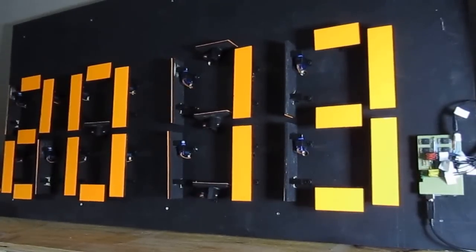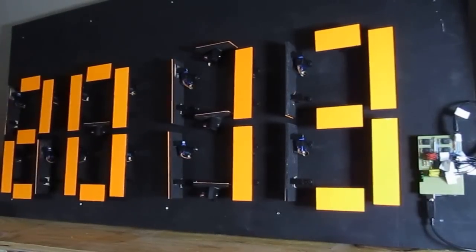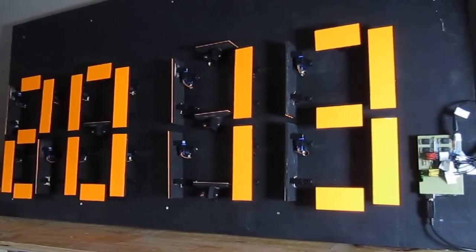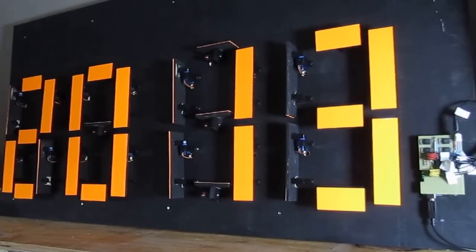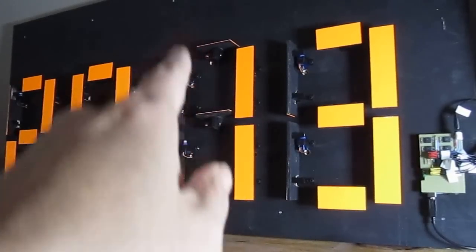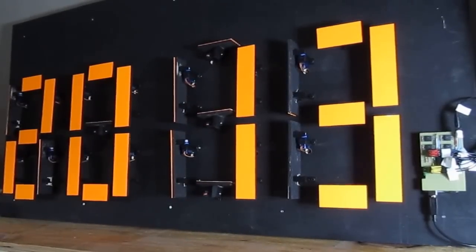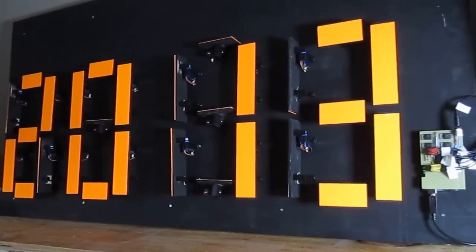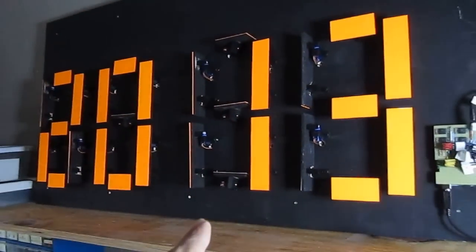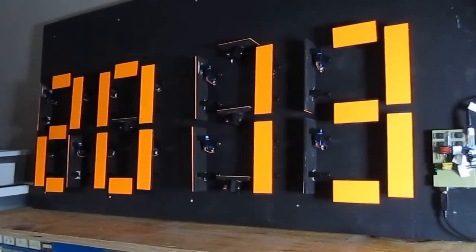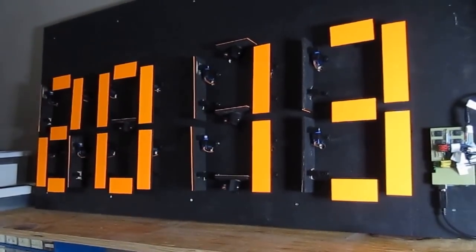So my thought was that I would drive the positive side of the power for the servo within a digit or column. That would be driven by one of these Darlington pairs. There's four Darlington pairs. Each of them drives the column, so that drives the positive side of the servo.